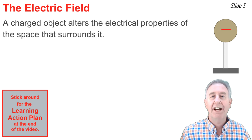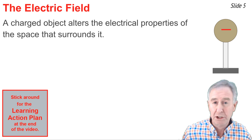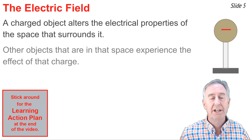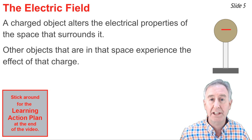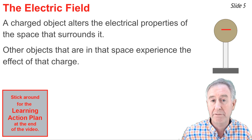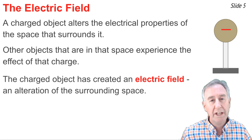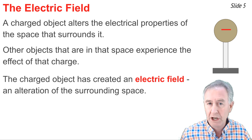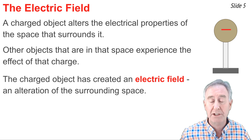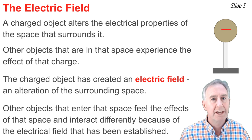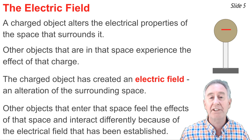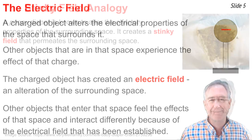Here's the logic of the idea. A charged object, like a negatively charged sphere, alters the electrical properties of the space that surrounds it, such that whenever any other charged object enters into that space, it behaves differently because it feels the effect of the field created by that electric charge. We say that the charged object has created an electric field — an alteration of the surrounding space — and when other objects enter into that space, they interact with it differently because of the presence of that electric field.